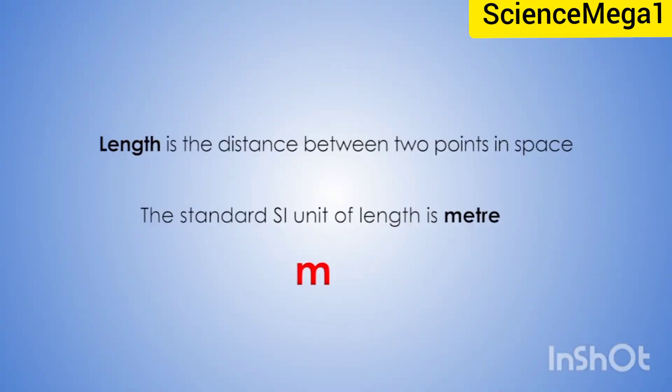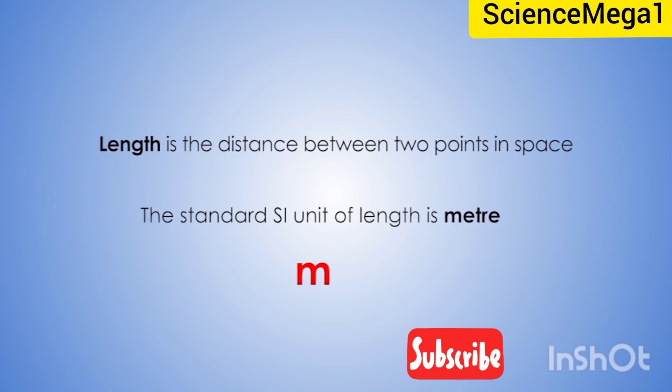Now let's focus on measuring length. Length is the distance between two points in space. The standard or SI unit for length is the meter, which we saw in our previous lesson, whose symbol is small m. For very small or large distances, SI prefixes are used.